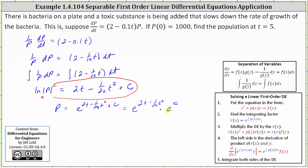And e^C is just some constant, so now we'll let D equal e^C, which gives us the general solution: p equals D times e^(2t - 1/20 t²). And I'll determine the constant D using the initial condition p(0) = 1,000. Let's do this on the next slide.